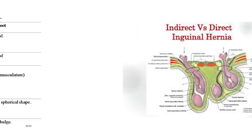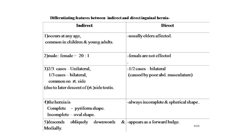Differentiating features between indirect and direct inguinal hernia: Indirect hernia occurs at any age, common in children and young adults; direct hernia usually affects the elderly. Males to females ratio in indirect hernia is 20:1; in direct hernia females are not affected. Indirect hernia — two-thirds of cases are unilateral, one-third bilateral, common on the right side due to later descent of the right testis. In direct hernia, half the cases are bilateral, caused by poor abdominal musculature. In indirect hernia, the shape is pyriform when complete, oval when incomplete; in direct hernia it is always incomplete and spherical.